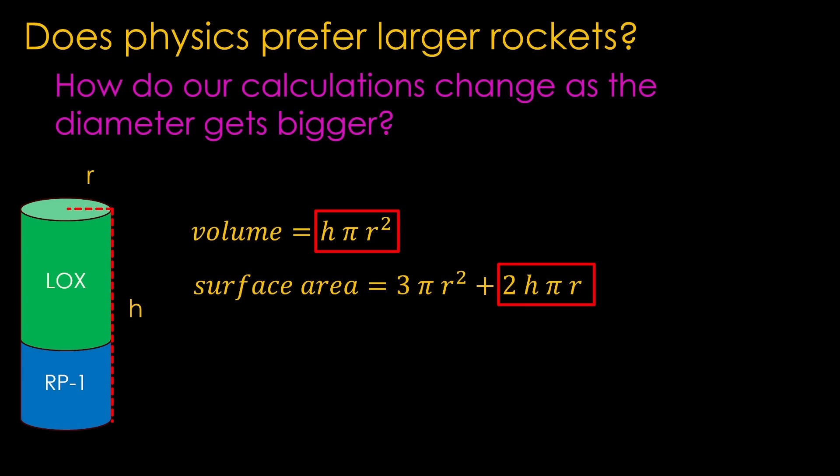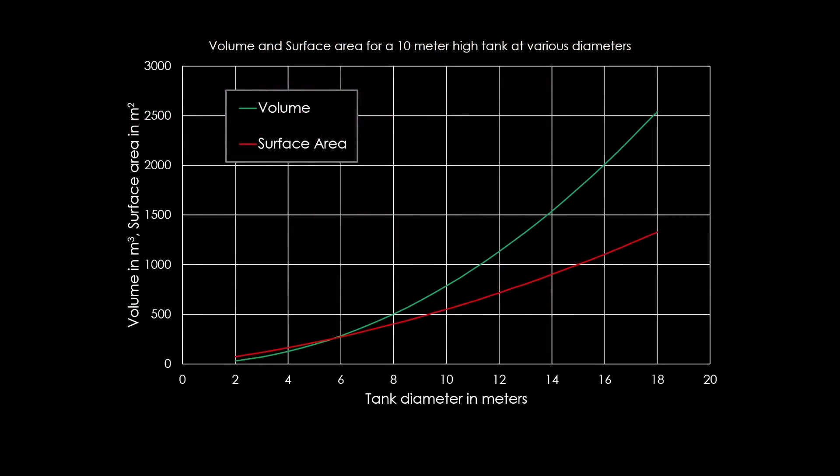But what if you put the two surface area terms together? There are mathematical ways to answer that question. You calculus folks can figure it out, but I prefer a good graph. If we arbitrarily choose a 10 meter high tank, we see that the volume increases faster than the surface area, which means that bigger tank diameters are better, and therefore bigger rockets are better. But it's not quite that simple.